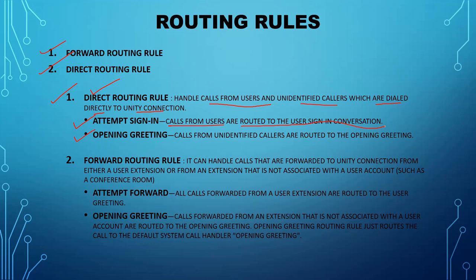If that number is not in Unity — for example you have a new extension and haven't configured the voicemail box — then pressing the messaging button will not give you an attempt sign-in option; instead it will hit the opening greeting, because calls from unidentified callers are routed to the opening greeting. An unidentified caller means that caller is not present in Cisco Unity Connection. Also, the direct routing rule is hit when there is no redirecting ID, meaning the call is not being redirected anywhere first.